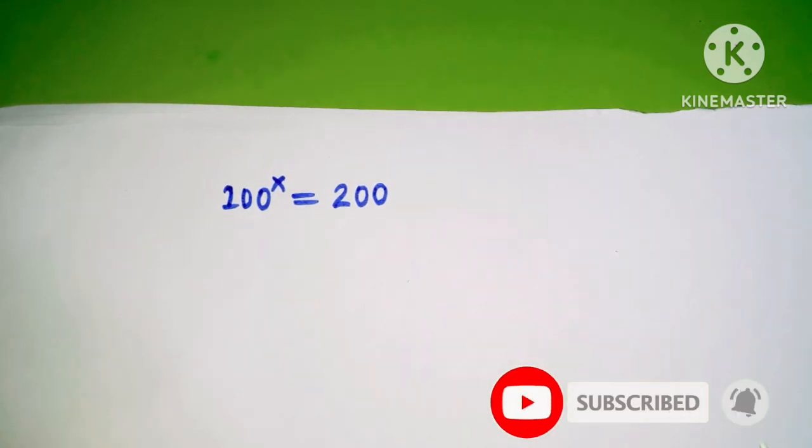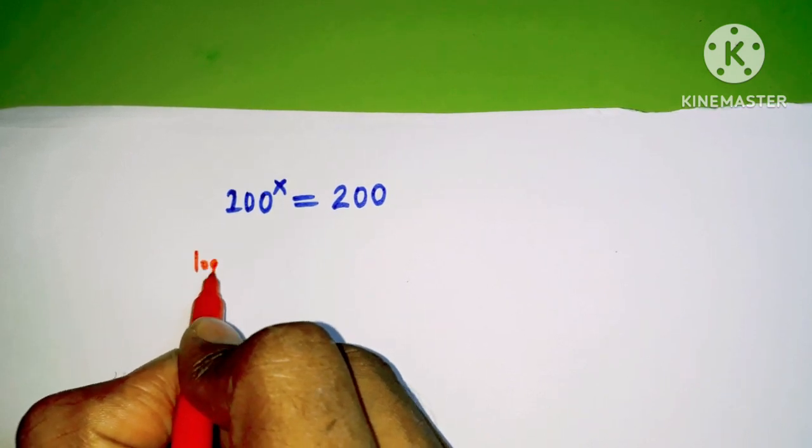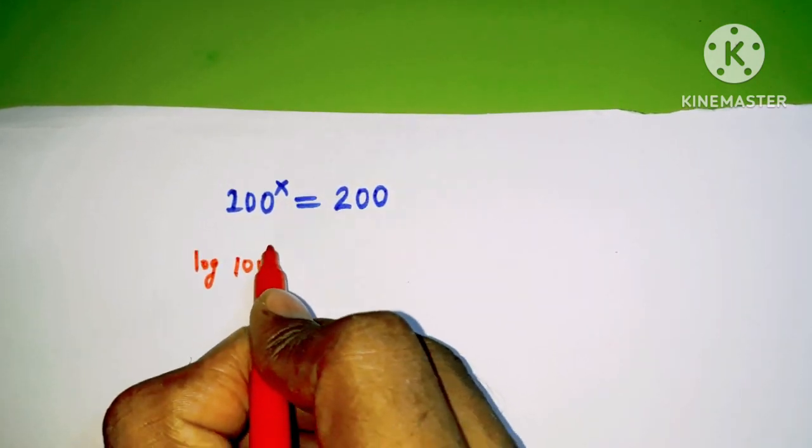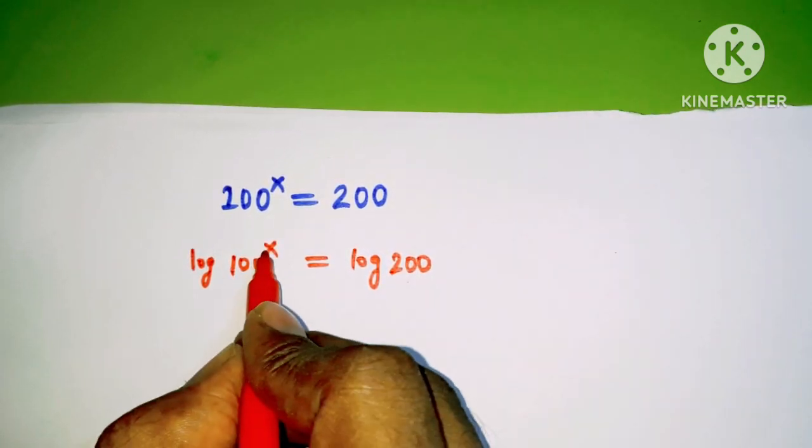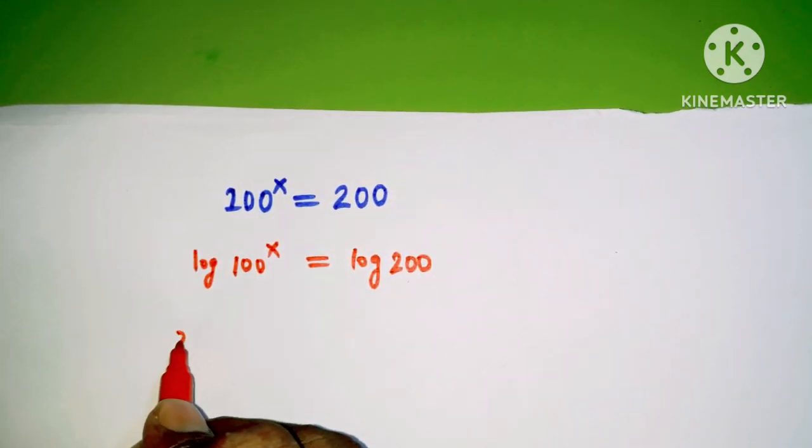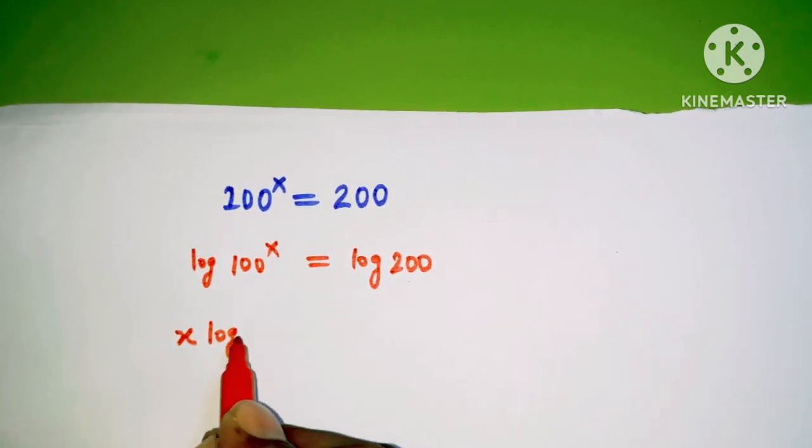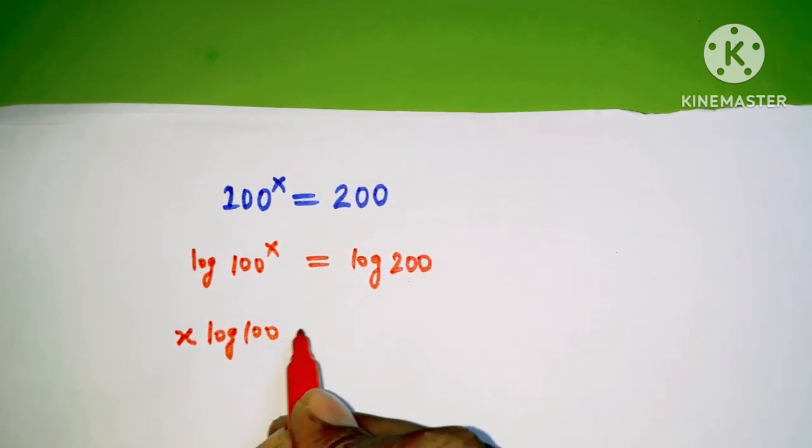Here the power is x, so I am taking log on both sides. Log 100 power x and here also log 200. So this x will come in front of this log. That will become x log 100 is equal to log 200.